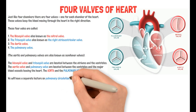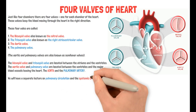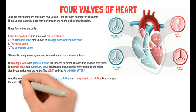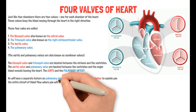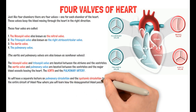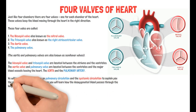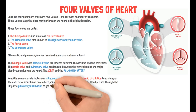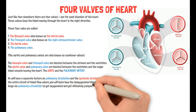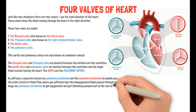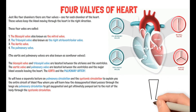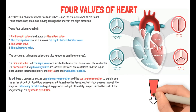We will have a separate lecture on pulmonary circulation and systemic circulation to explain the entire circuit of blood flow, where you will learn how deoxygenated blood passes through the lungs via pulmonary circulation to get oxygenated, and ultimately gets pumped out to the rest of the body through the systemic circulation.